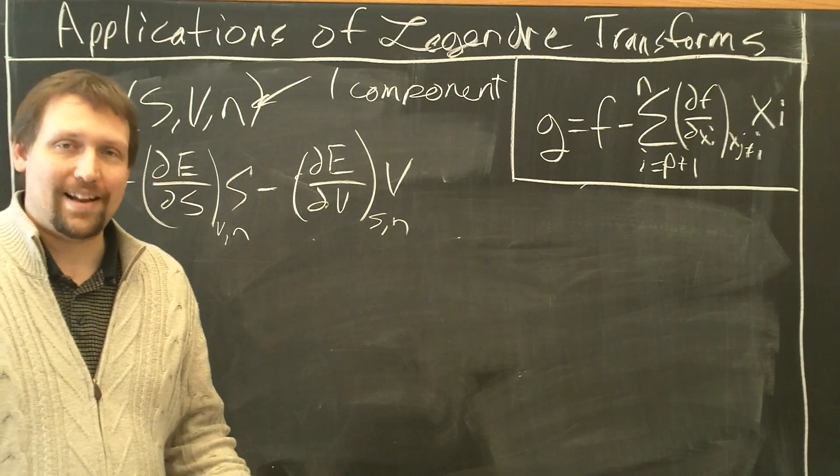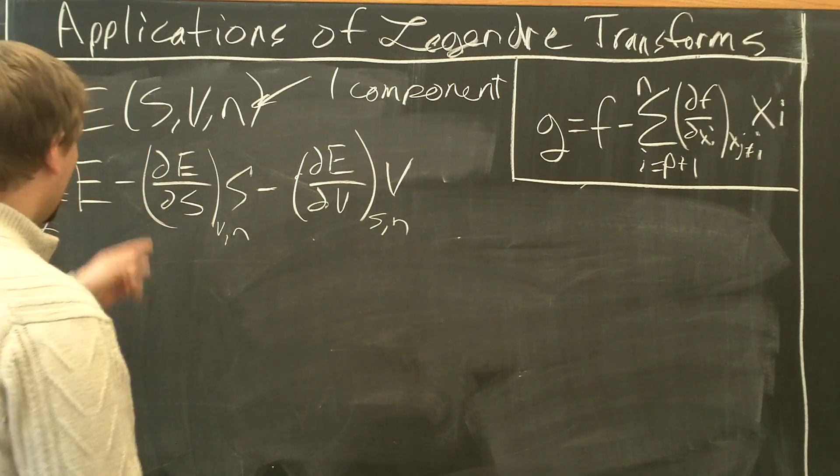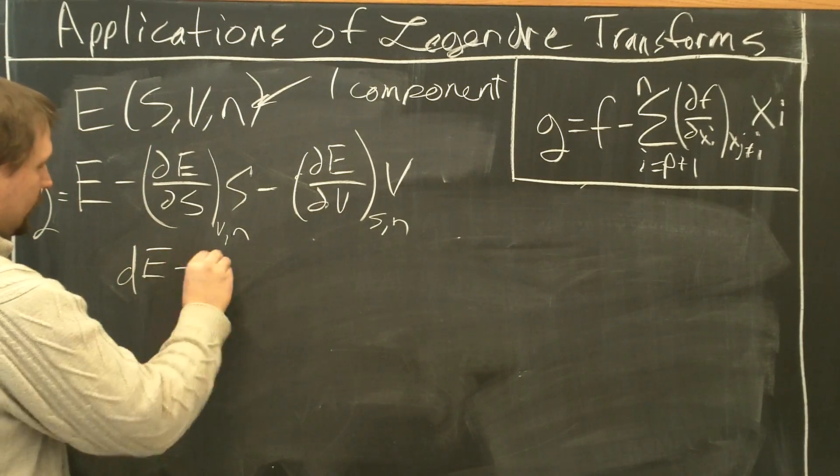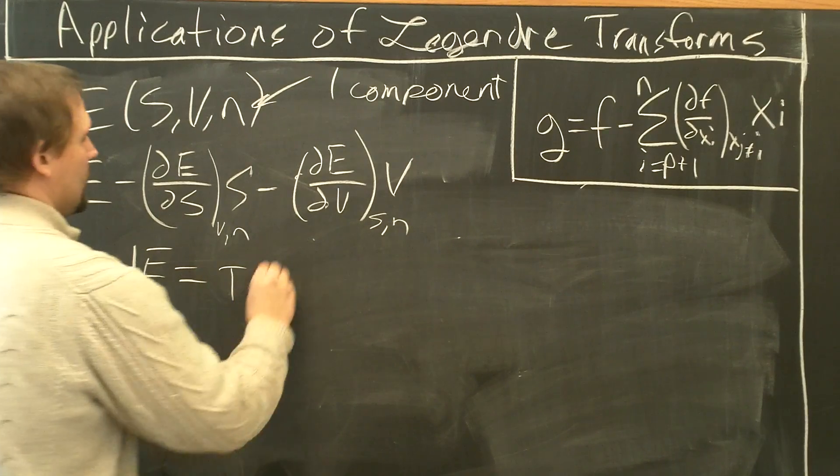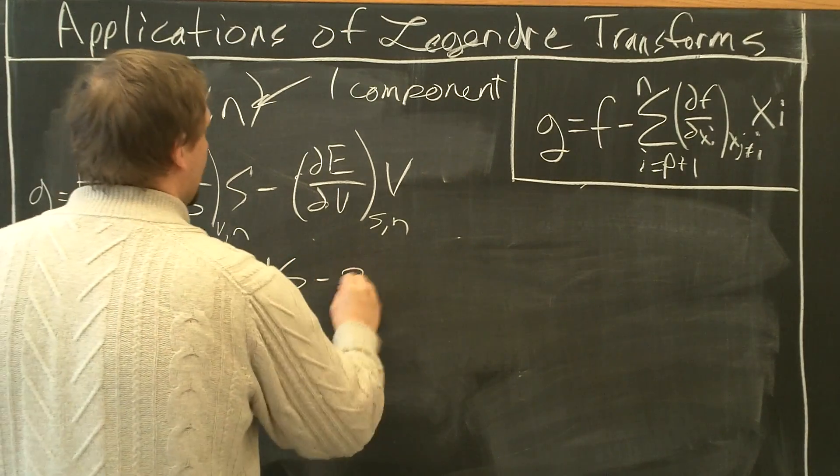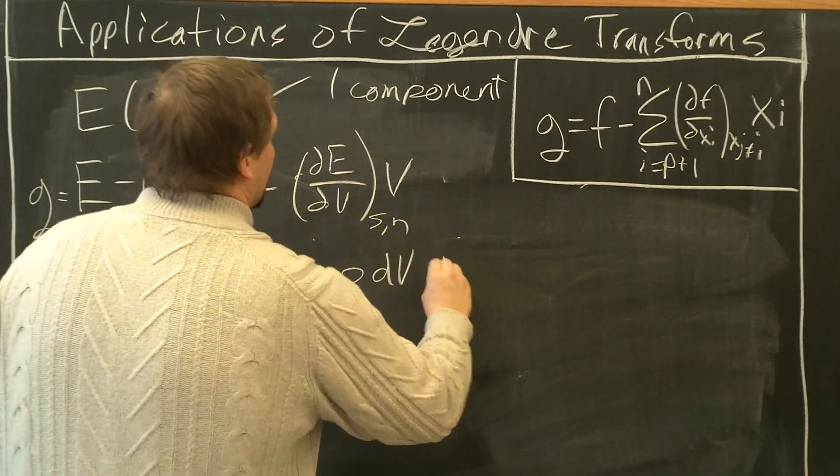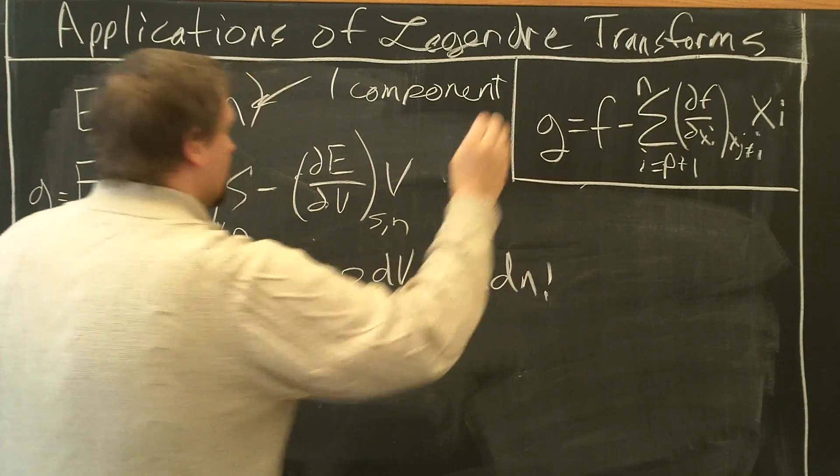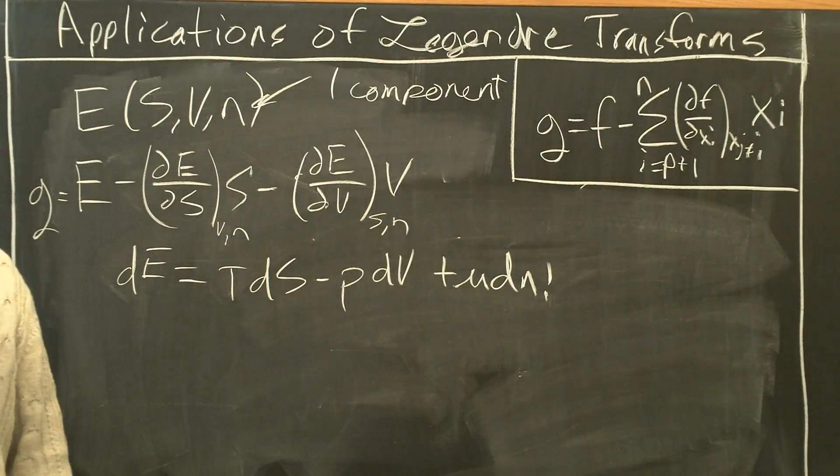So what is this new thermodynamic state function? Well, let's write down this equation again for E. Differential E, that is, equals T dS minus P dV plus μ dN, or dN for one component.